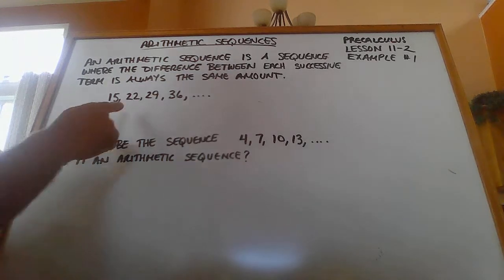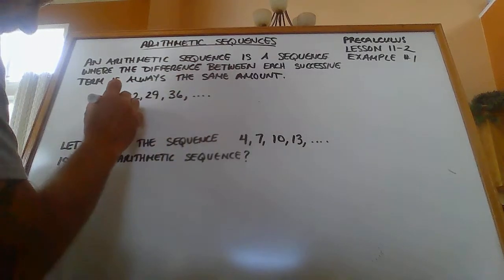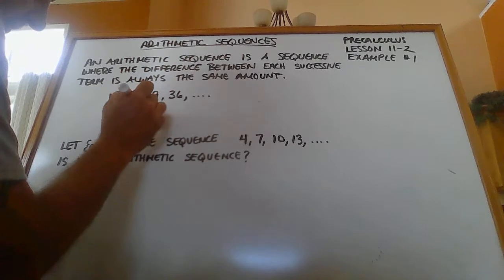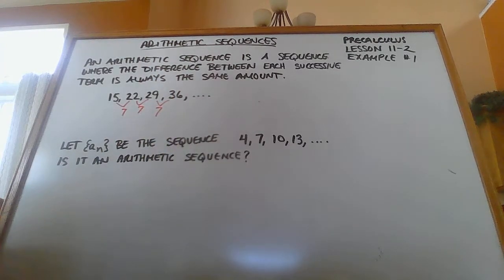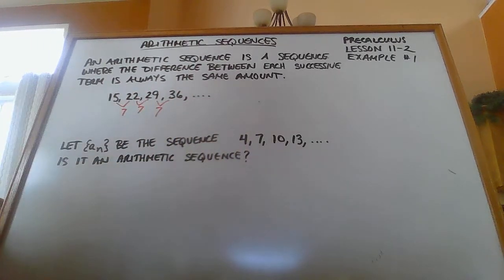So if we look at this sequence right here, 15, 22, 29, 36, the difference between these two is 7, the difference between these two is 7, and the difference between those two is 7. And since the pattern continues on exactly the same, it always has a difference of 7.